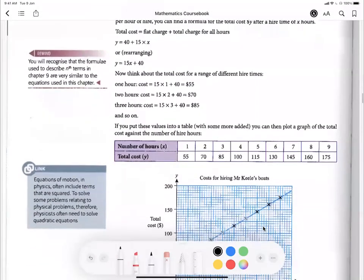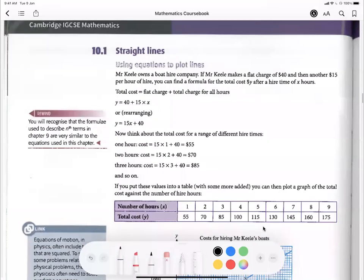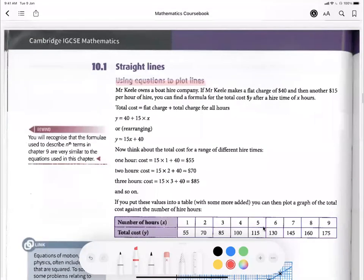Okay, so straight line here is the same thing. But then you just use information to plot the line. So if you have certain things, it says owns a boat hire company charges $40 flat, and then another $15 per hour of hire.